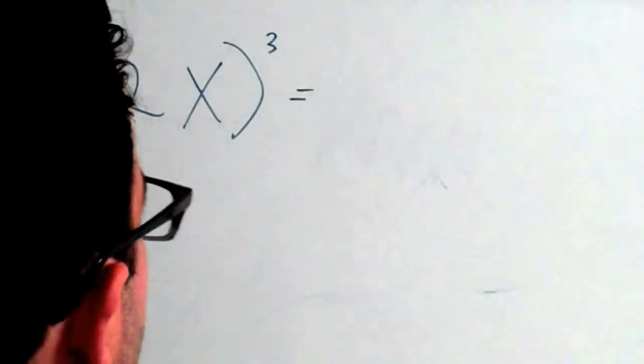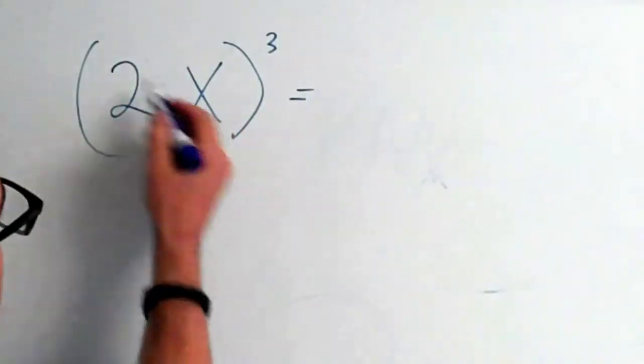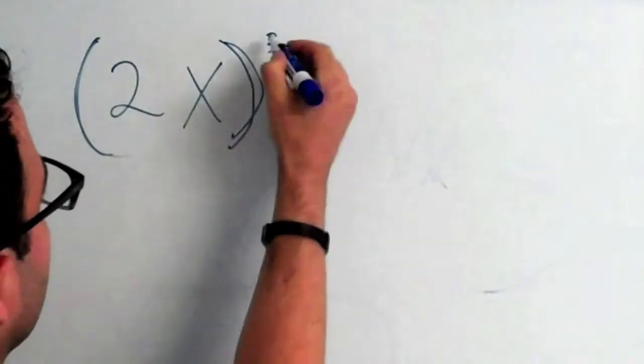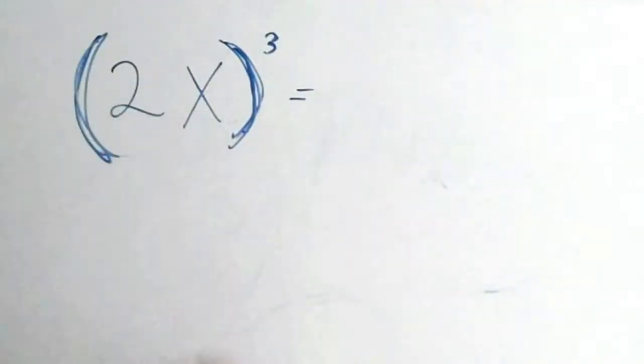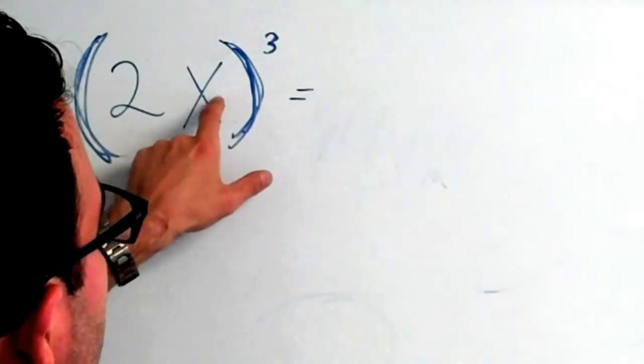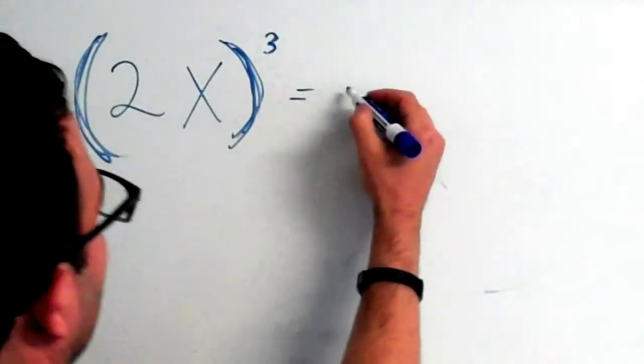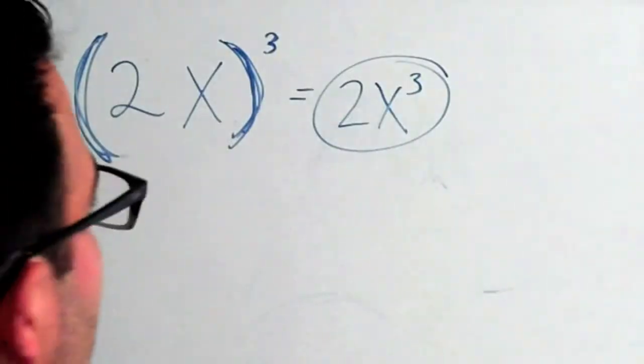One last error I want to show you that students often make: if you have 2 times x all in parentheses, and it's all being raised to the 3rd power, what students often do wrong is they will only apply the exponent to the x. So they'll say, oh, well, that is 2x cubed. But that is completely false.